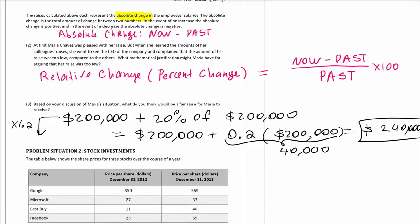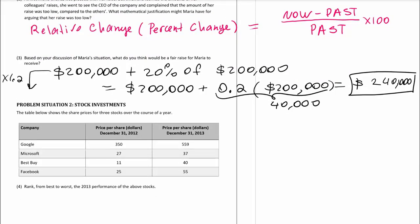Here we're looking at another situation where relative change and absolute change play a role. We have a table of stock prices for four stocks: Google, Microsoft, Best Buy, and Facebook. Google has since renamed its stock to Alphabet, but it doesn't matter. We're going to see what we can say about the stock performance.